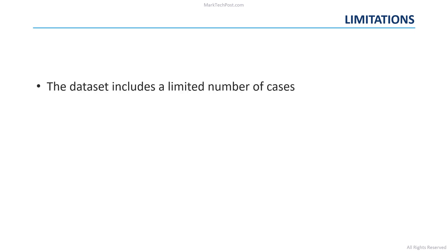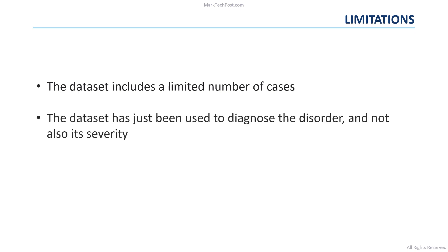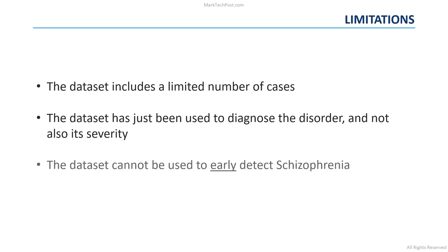To conclude, we should consider some limitations of this paper. First, the available EEG datasets, like the one used in this study, consist of a very limited number of cases for training and evaluation. Moreover, the dataset was used only to diagnose schizophrenia and not to detect the severity of the disorder. Finally, this dataset cannot be used for early detection of schizophrenia — a capability that would make the system useful in real-world scenarios — since the samples include only confirmed patients or healthy people, not those who are going to face the mental disorder.